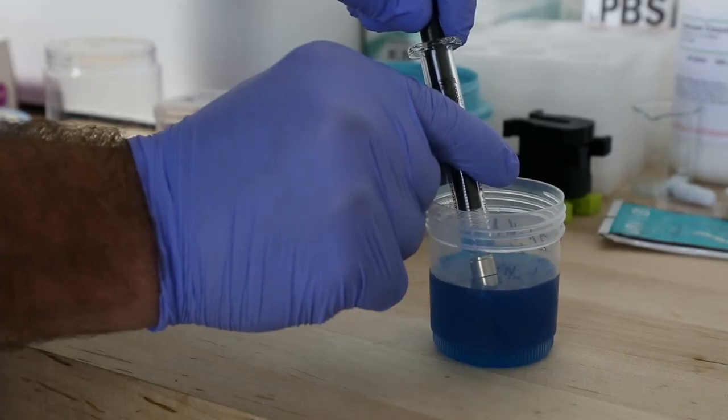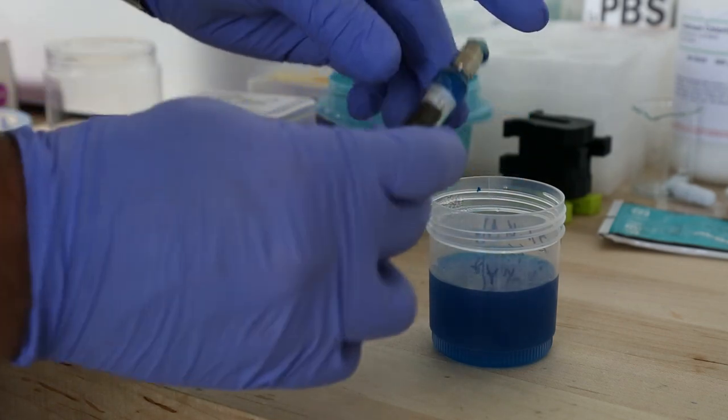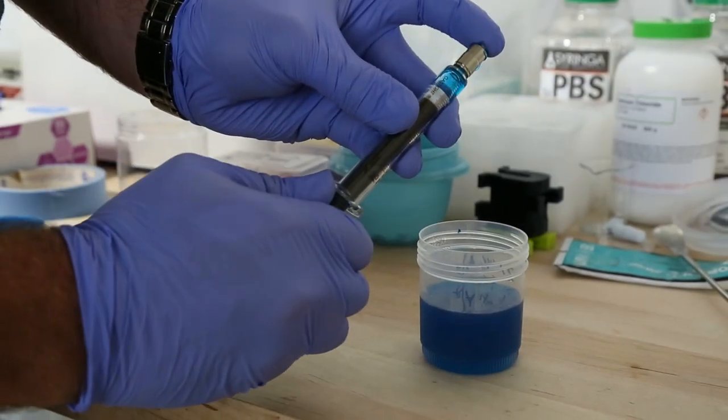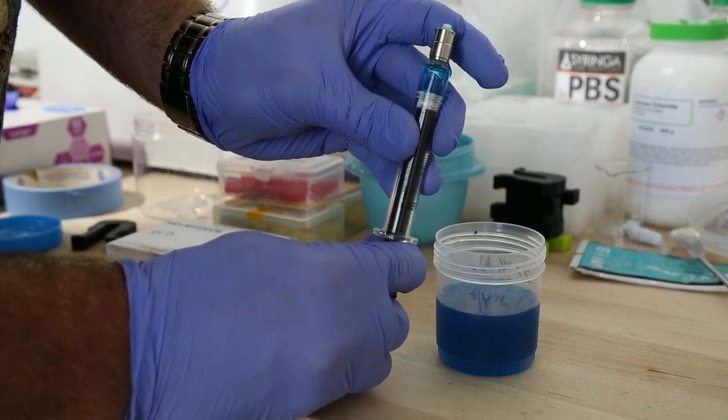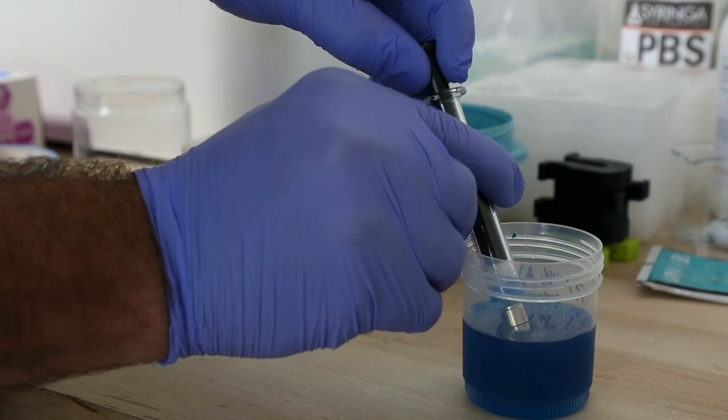So now we're gonna load our 5 milliliter gas-tight syringe. We've got a big air bubble on the top so I'm gonna stop, flip it upside down, put my finger over the top, pull vacuum, and release. And now I should be able to push the air bubble out the top and then continue filling.